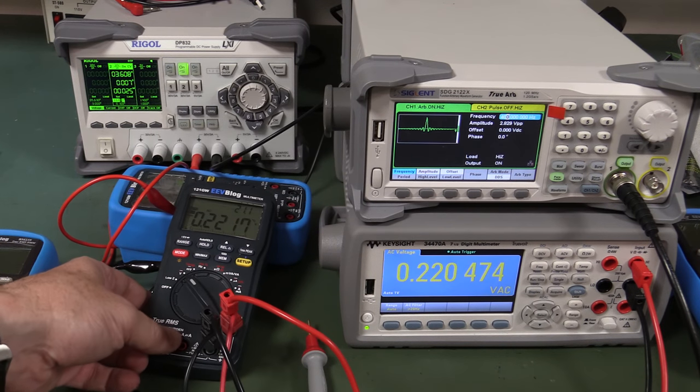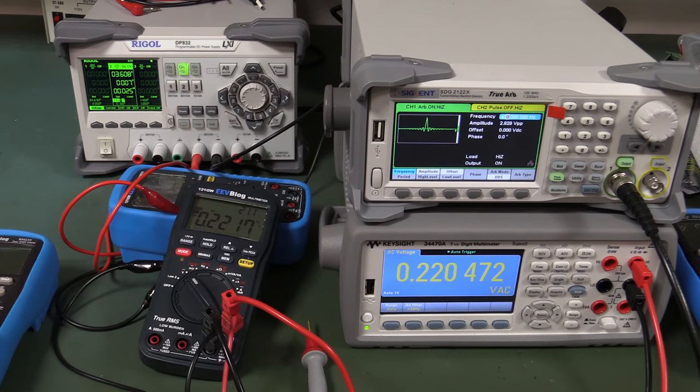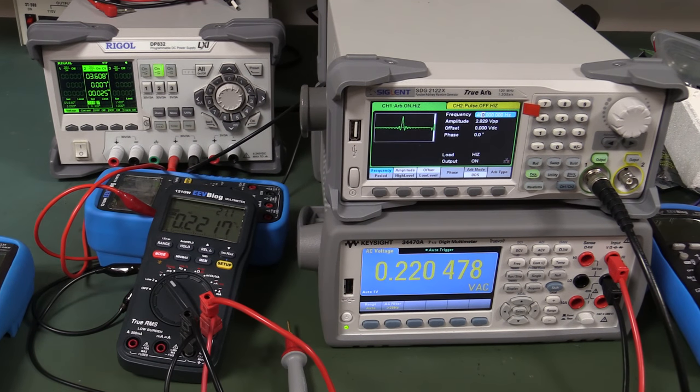Hi, I was just doing some experiments on the new EEVblog 121GW multimeter and I thought this might make an interesting video. It's to do with the true RMS converter chip used inside this thing.